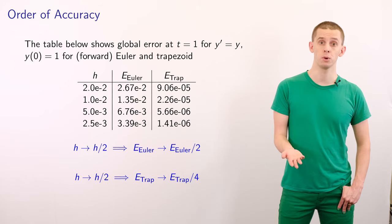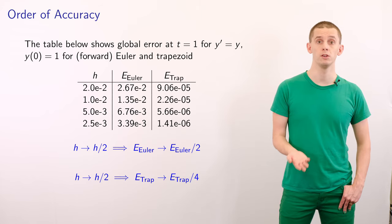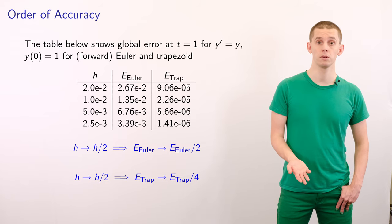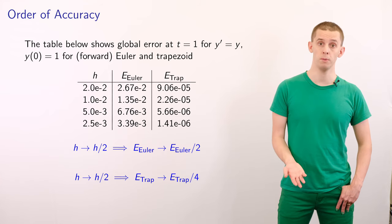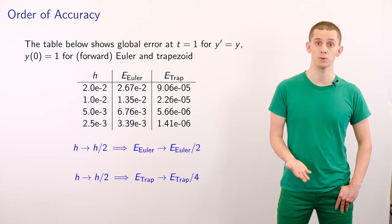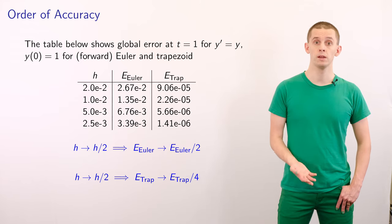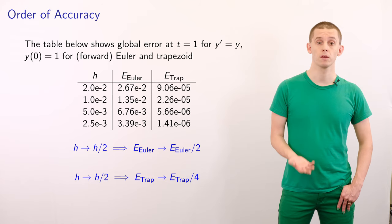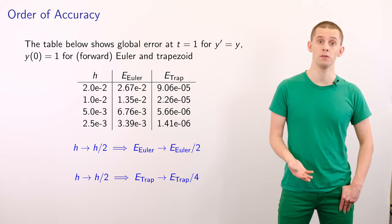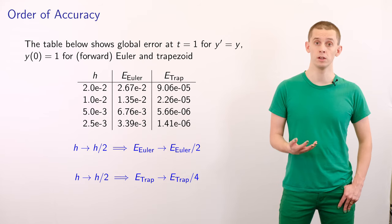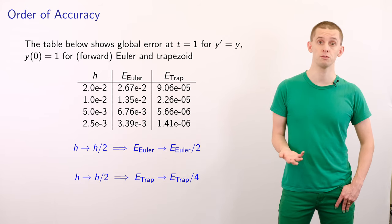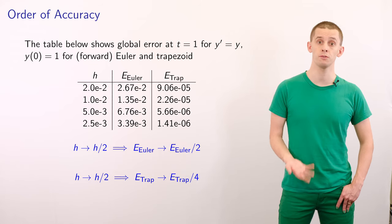We can verify these convergence properties with the simple example y′ = y with y(0) = 1. The table shows the global error of our solutions at t = 1 using both the forward Euler method and the trapezoid method for a variety of step sizes h. If we divide the step size by 2, the global error for the Euler method is roughly divided by 2. However, for the trapezoid method, the global error is roughly divided by a factor of 4. This is consistent with the forward Euler method being order 1 and the trapezoid method being order 2.